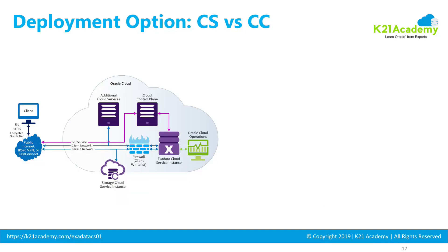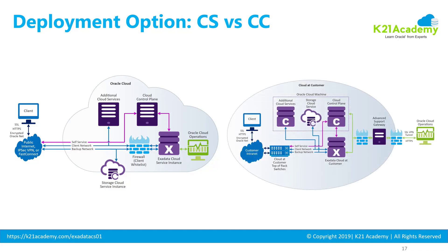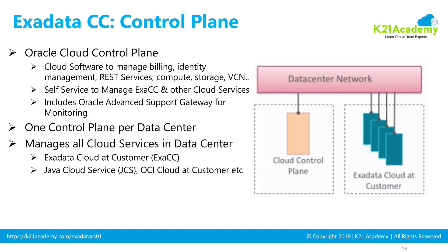Looking at the two Exadata cloud deployment options — ExaCS and ExaCC — you'll notice they are more or less similar with some minor differences. In Exadata Cloud at Customer, Oracle ships an additional component called the control plane, along with an Oracle Advanced Support Gateway for remotely monitoring and managing the Exadata hardware.